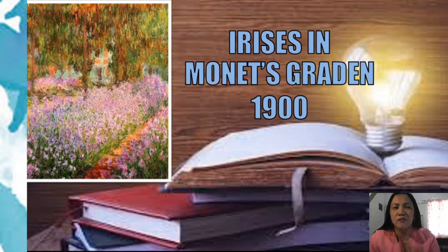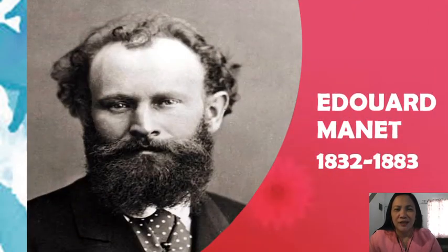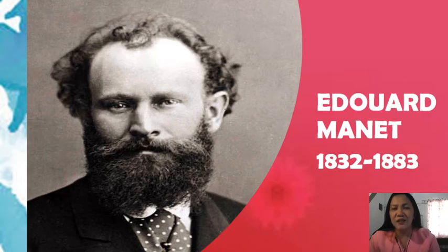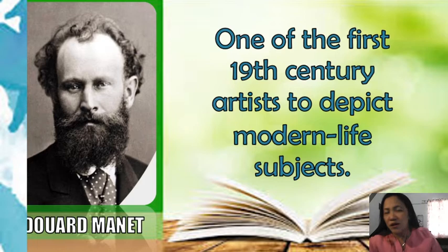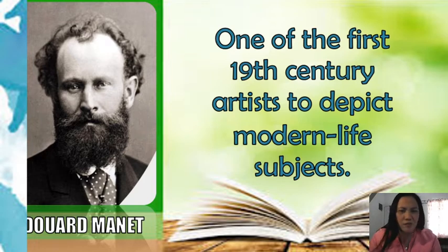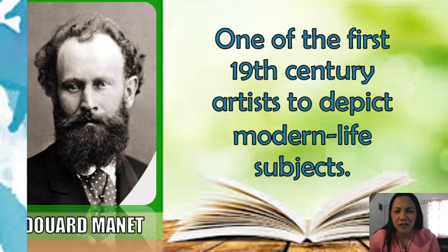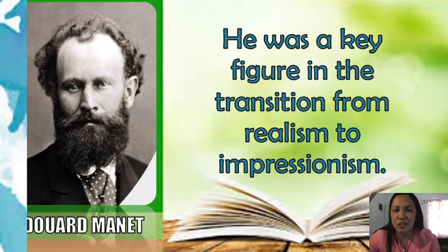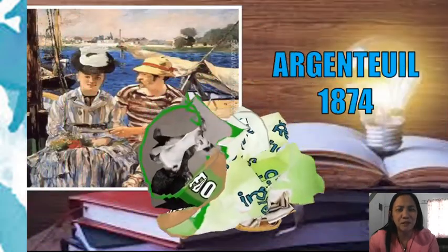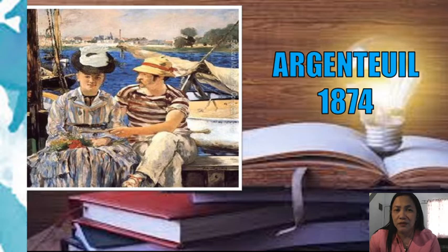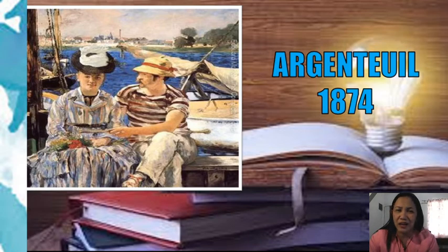Next we have Edouard Manet, 1832 to 1883. He was one of the first 19th-century artists to depict modern life subjects — scenes common in everyday life. He was a key figure in the transition from realism to impressionism. An example is 'Le Déjeuner sur l'herbe' (1874), a typical scene of a boy and a lady in friendly conversation with a beautiful scenery behind them.